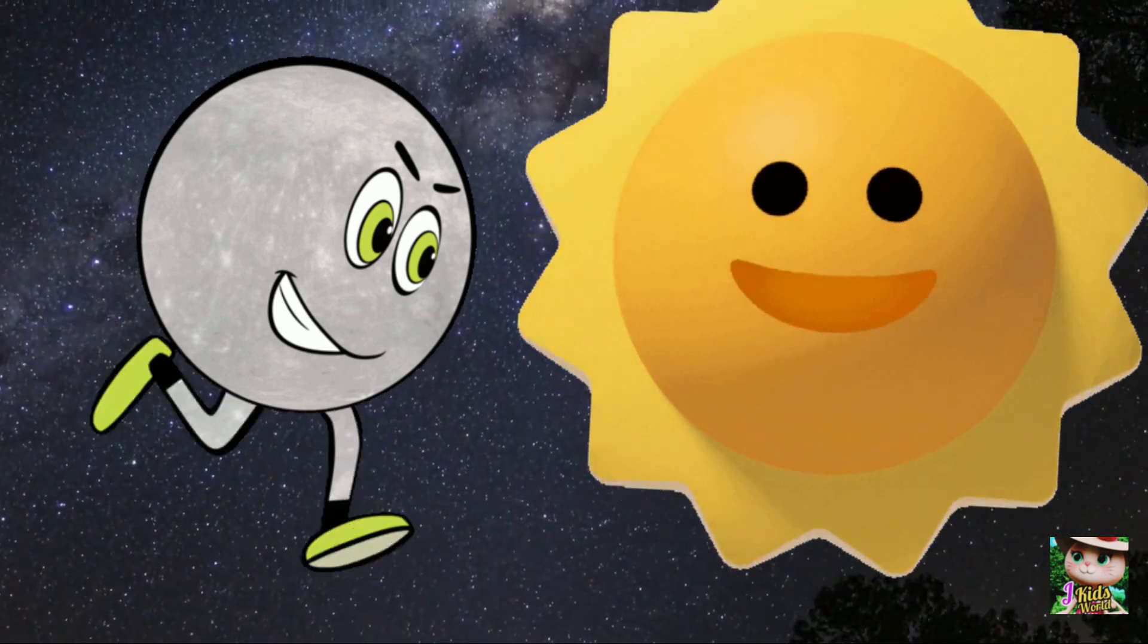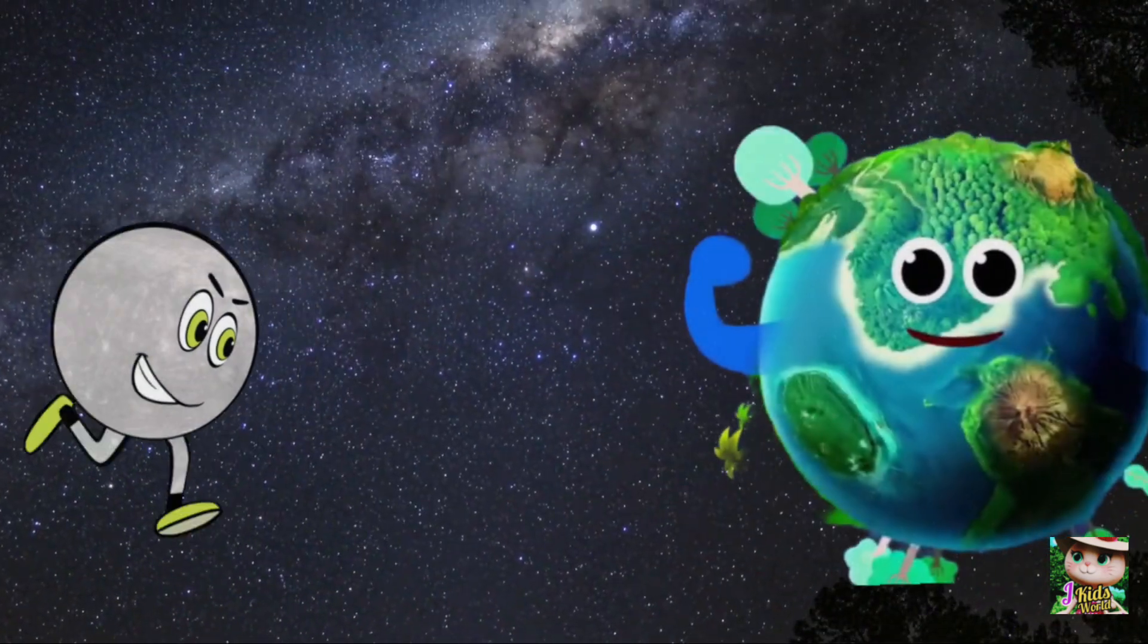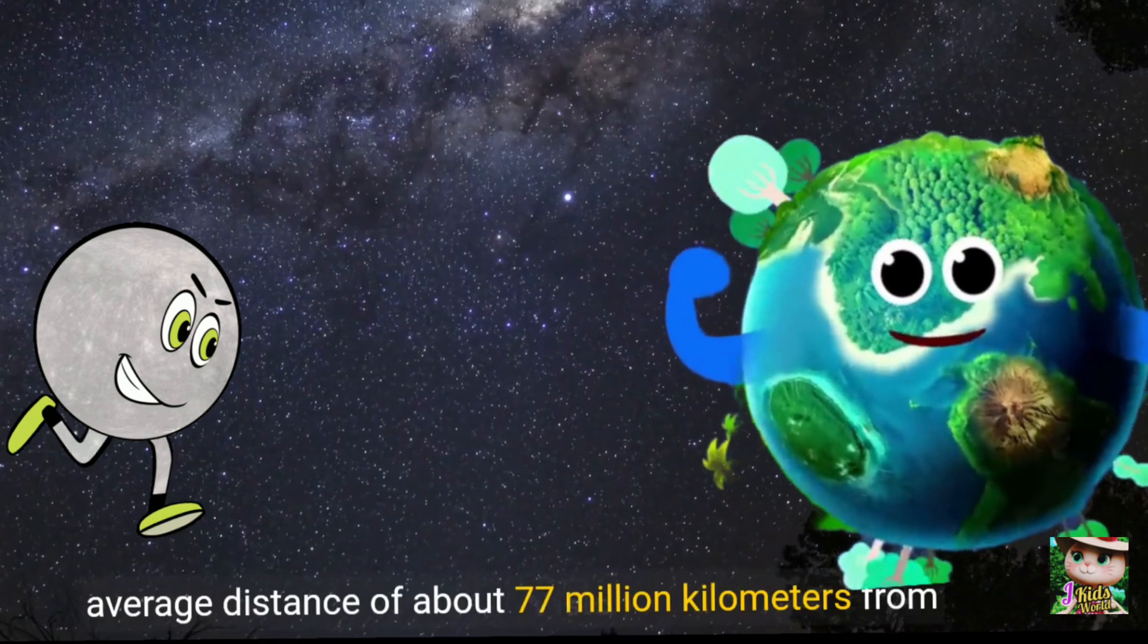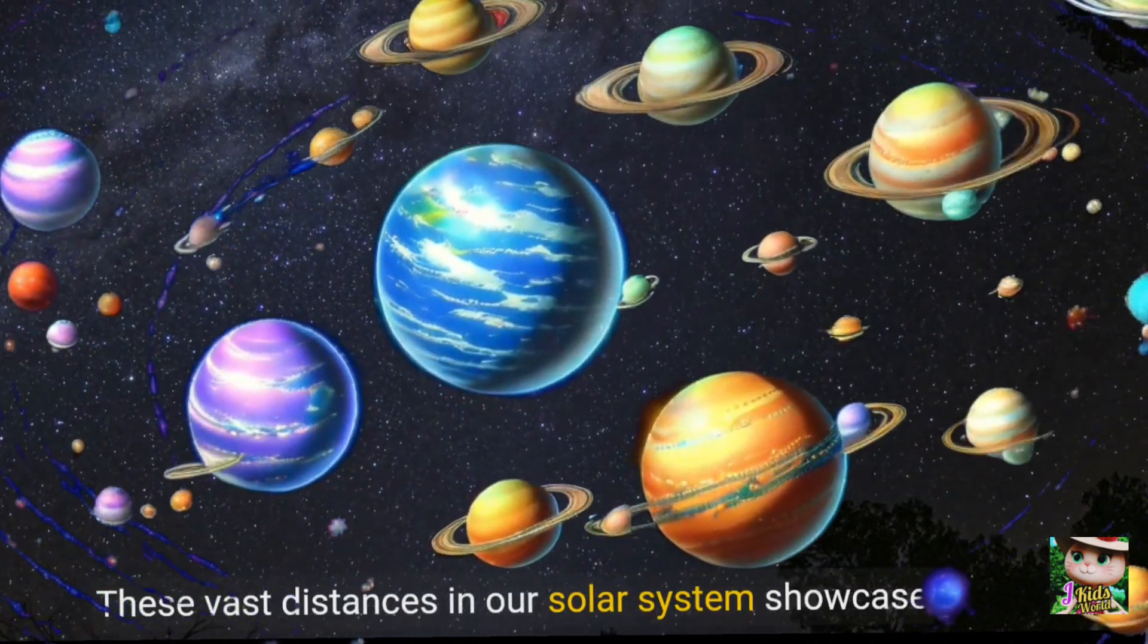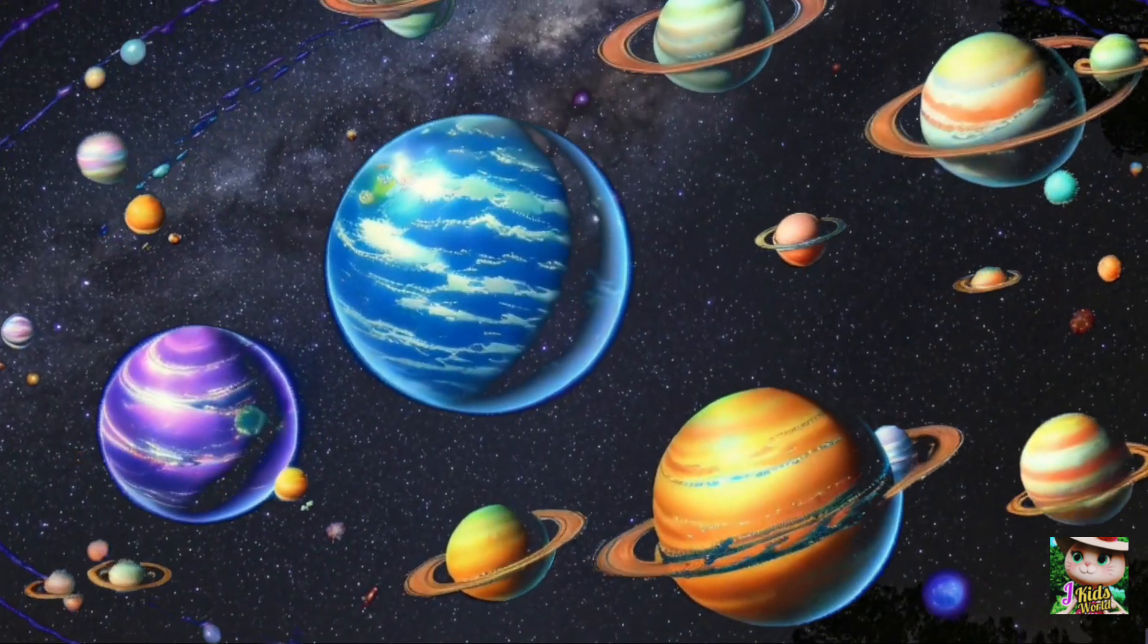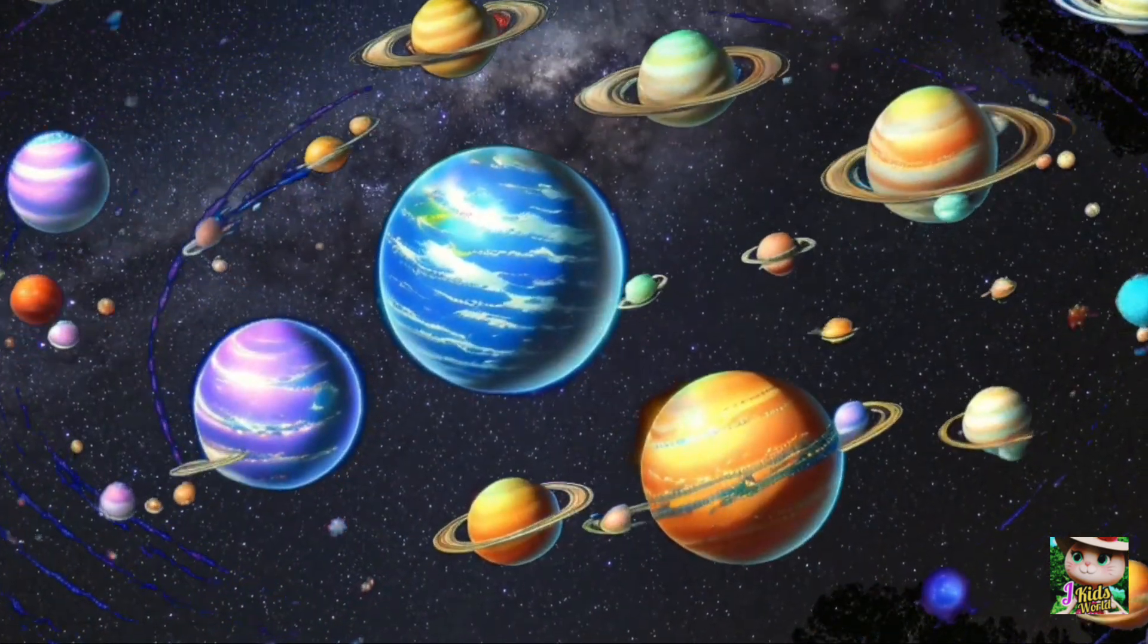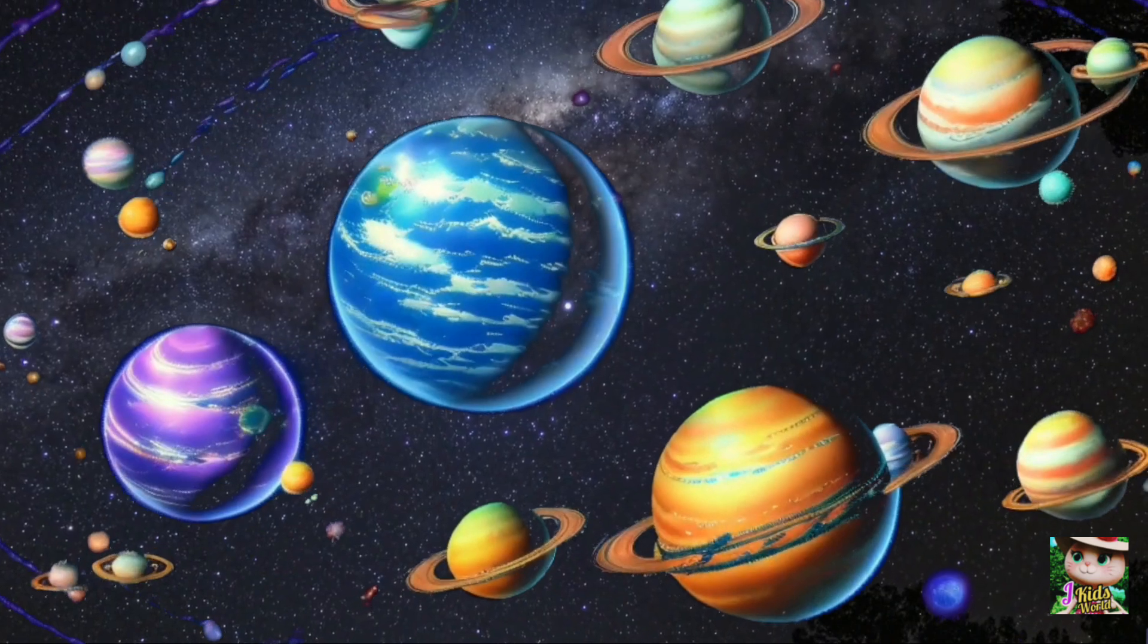Mercury, the closest planet to the sun, is at an average distance of about 77 million kilometers from Earth when the two planets align. These vast distances in our solar system showcase the immense scale of our cosmic neighborhood, each planet dancing in its own celestial ballet.